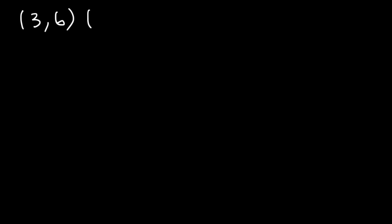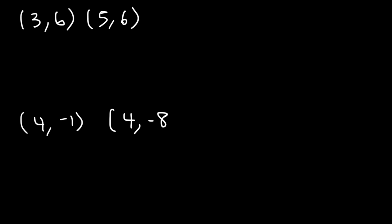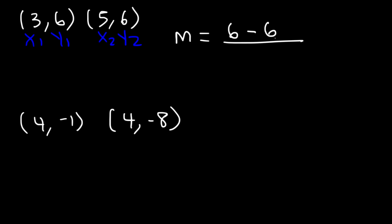Try these two examples: 3 comma 6 and 5 comma 6, and also 4 comma negative 1 and 4 comma negative 8. Go ahead and calculate the slope between each pair of points. For the first one, let's call this x1 and y1, and this is x2 and y2. So m is y2, which is 6, minus y1, which is also 6, divided by x2 minus x1 — that's 5 minus 3. 6 minus 6 is 0, and 5 minus 3 is 2. 0 divided by anything is equal to 0, so the slope is 0.